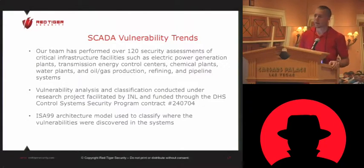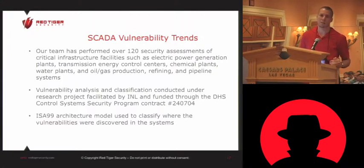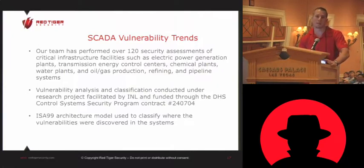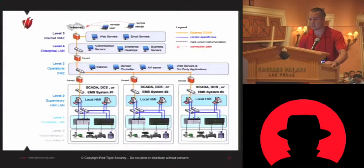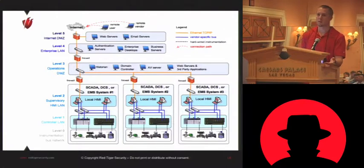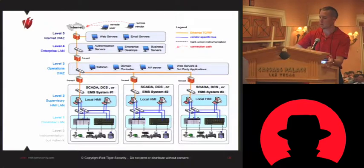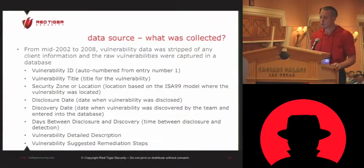Over the last nine or ten years, we collected a lot of data. At the end of 2008 and early 2009, DHS wrote a contract with us to go through and mine through that data. We collected over 38,000 vulnerabilities in SCADA and critical infrastructure systems. We wanted to know where these vulnerabilities were discovered in the architecture model — was it at the controller layer with valves and pumps, at the HMI console that operators use, or on the corporate side?